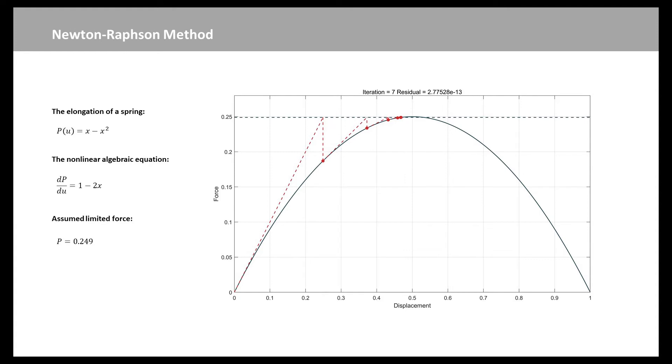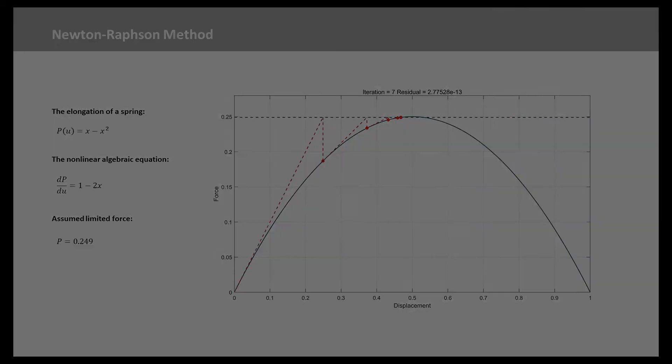The quadratic convergence rate of Newton-Raphson method guarantees convergence within few iterations. Faster convergence makes Newton-Raphson method ideal when solving large systems of nonlinear equations, where each iteration costs in terms of computational time.